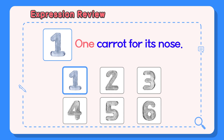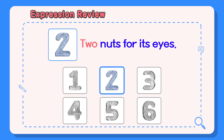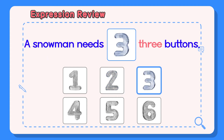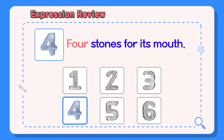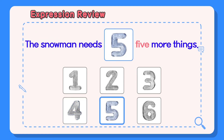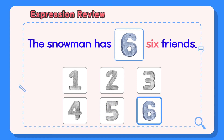One carrot for its nose. Two nuts for its eyes. Four stones for its mouth. The snowman needs five more things. The snowman has six friends.